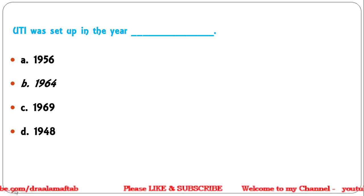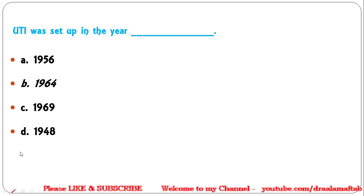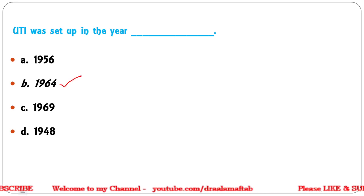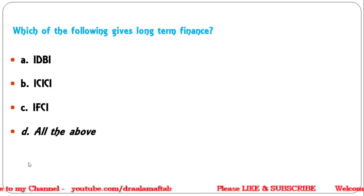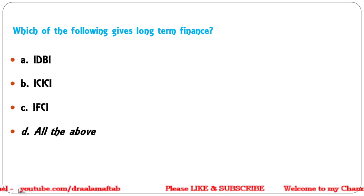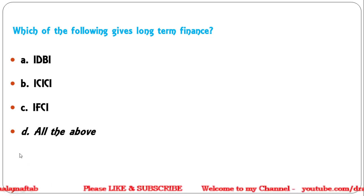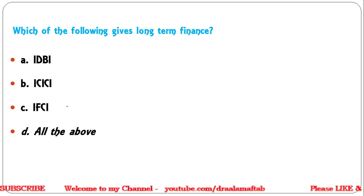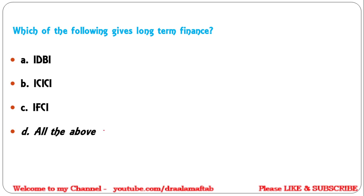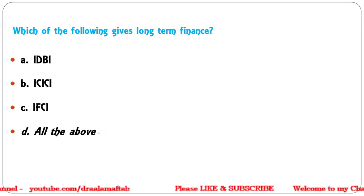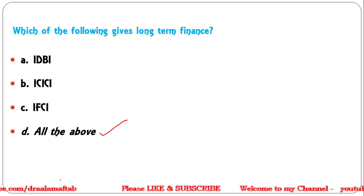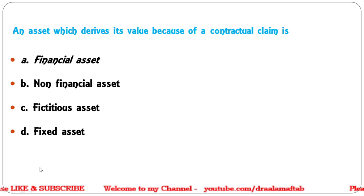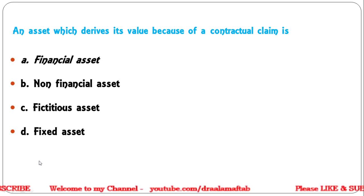Next question: UTI — Unit Trust of India — was set up in the year — 1956, 1964, 1969, or 1948? UTI was established in the year 1964. Next question: which of the following gives long-term finance — IDBI, ICICI, IFCI, or all of the above? All three are development finance institutions in India and they all provide long-term finance.